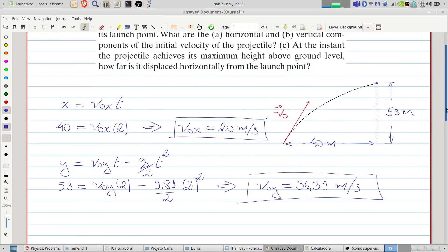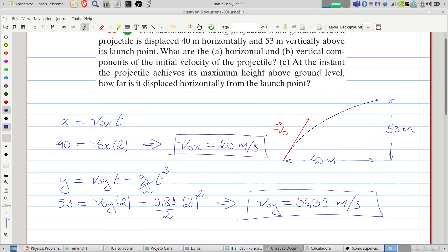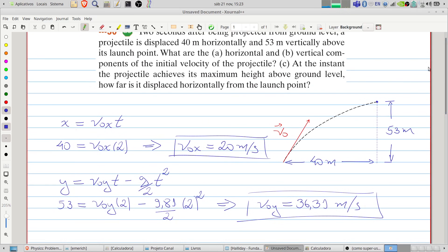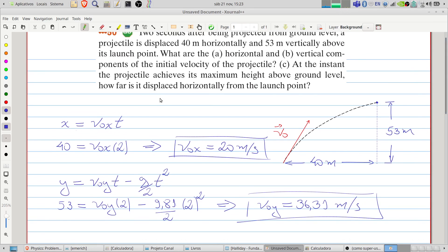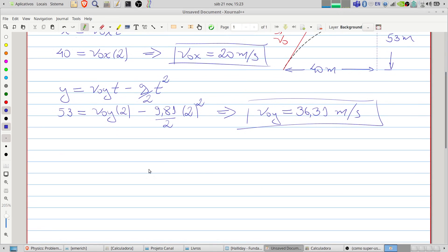After that, a and b are solved. Let's do item c. The item c, we want the horizontal displacement when the height is maximum. Maximum height, of course, implies the y velocity equals 0.